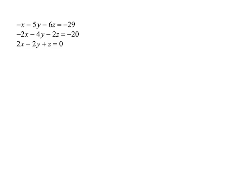I'm going to work out number four of the independent practice. Let's see our plan of attack. Let's look at the Zs — I have a negative six and a negative two, I don't want to mess with that. Ys, I am definitely not going to mess with the Ys, I have coefficients of five, four, and two. How about X? I think X is good. I'm going to first eliminate X.